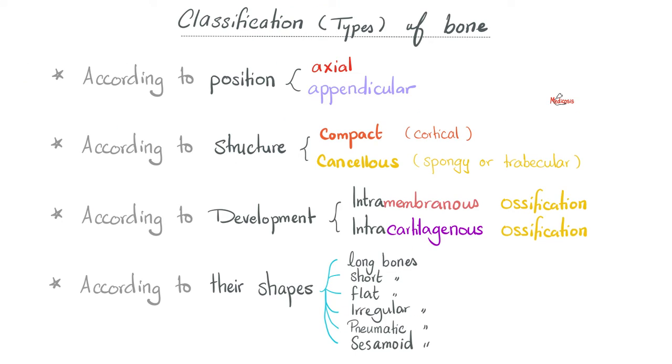So there you have it: long bones, short bones, flat bones, irregular bones, pneumatic bones, and sesamoid bones.